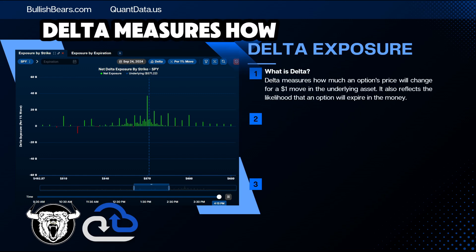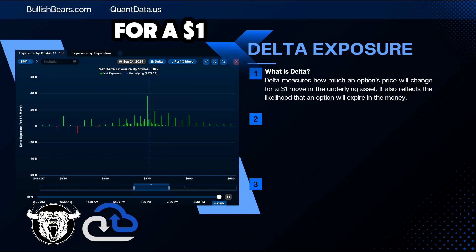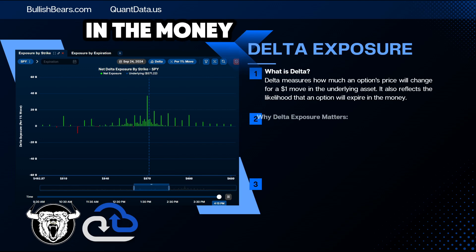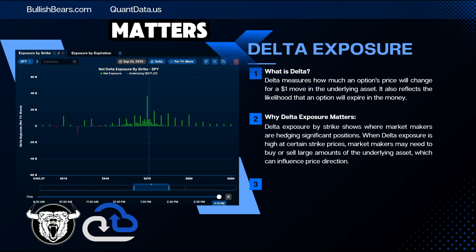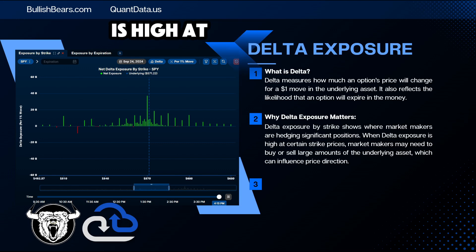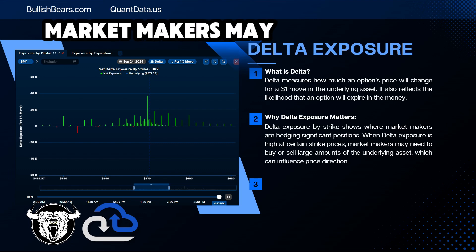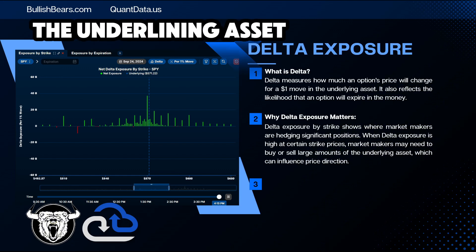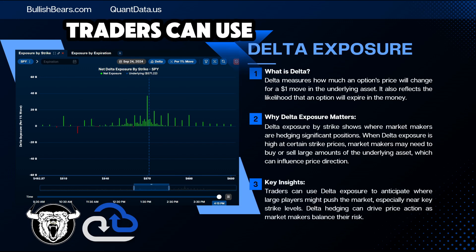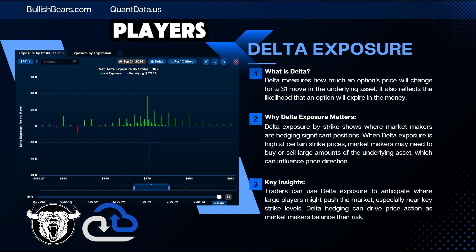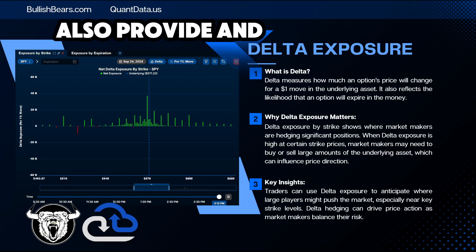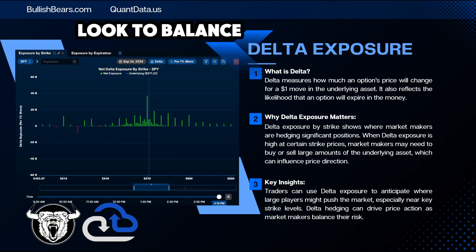So what is delta? Delta measures how much an option strike will change for a $1 move in the underlying asset. It also reflects the likelihood that an option will expire in the money. Delta exposure by strike shows where market makers are hedging significant positions. When delta exposure is high at certain strike prices, market makers may need to buy or sell large amounts of the underlying asset, which can influence price direction. Traders can use delta exposure to anticipate where large players might push the market, especially near key strike levels. Delta hedging can also drive price action as market makers look to balance their risk.